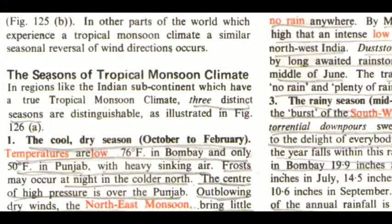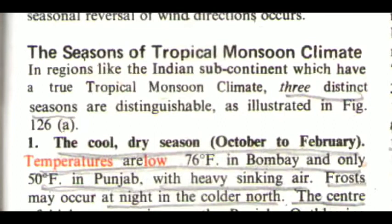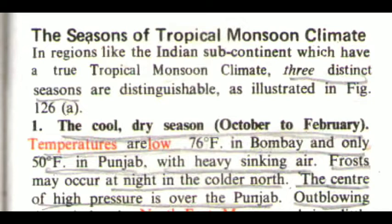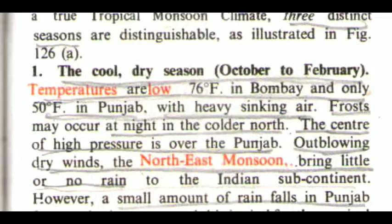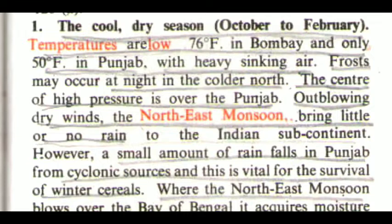The Seasons of Tropical Monsoon Climate. In regions like the Indian subcontinent, which have a true tropical monsoon climate, three distinct seasons are distinguishable. The first is the cool dry season, October to February. Temperatures are low — 76 degrees Fahrenheit in Bombay and only 50 degrees Fahrenheit in Punjab — with heavy sinking air. Frost may occur at night in the colder north. The centre of high pressure is over the Punjab. Out-blowing dry winds, the northeast monsoon, bring little or no rain to the Indian subcontinent. However, a small amount of rain falls in Punjab from cyclonic sources, and this is vital for the survival of winter cereals.